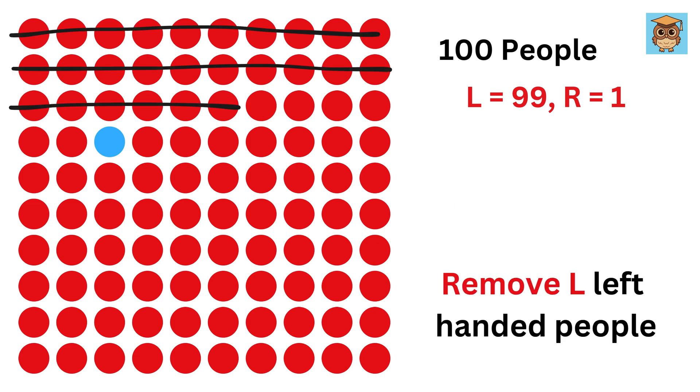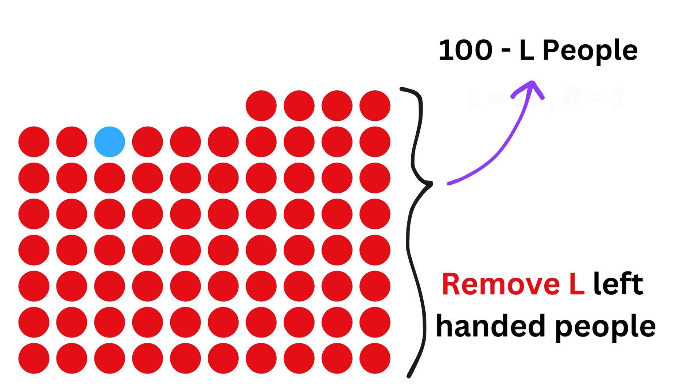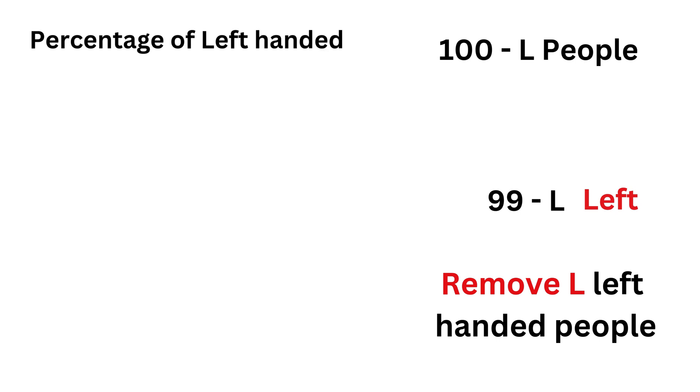Let us remove L left-handed people. So, we have 100 minus L total people left out, of which the left-handed people will be 99 minus L. So, the percentage of left-handed people will be 99 minus L, divided by 100 minus L, and we want this to be equal to 98%, or 98 over 100, which in decimal will be 0.98.